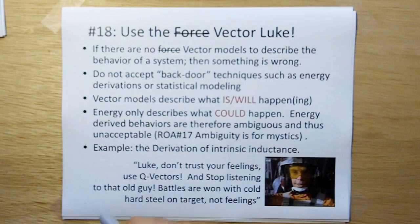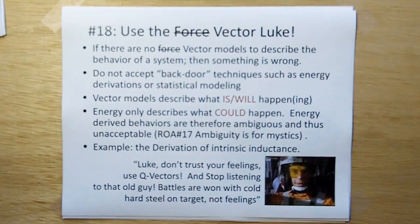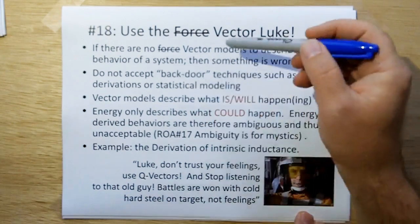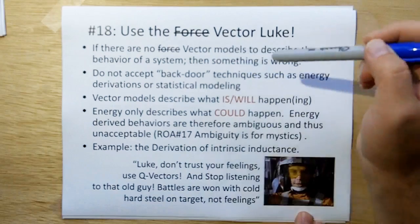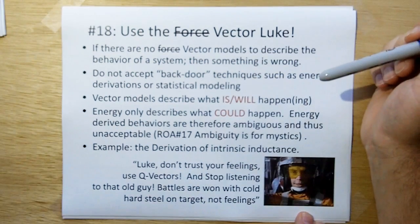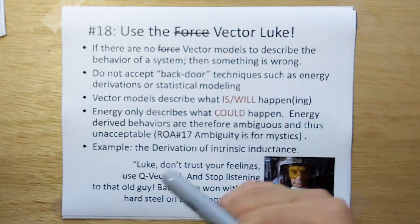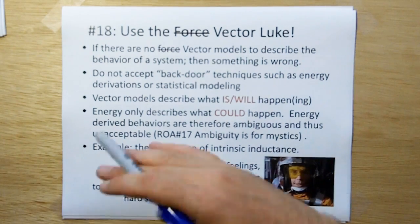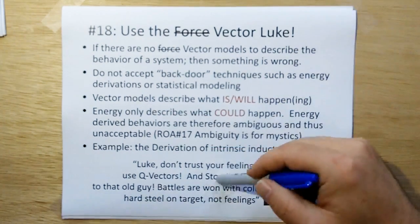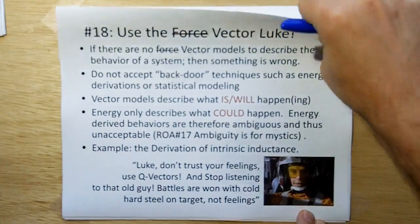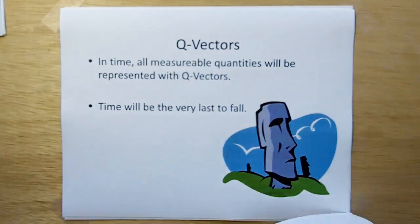So if we have models of nature that follow vectors, those are very deterministic models. If there are no vector models to describe the behavior system, then something is wrong. Basically in the last couple of slides we showed that we can reinterpret mass as inertia. We've changed it from a non-vector phenomenon to a vector phenomenon.